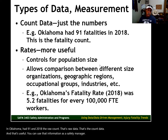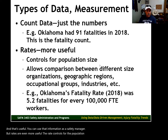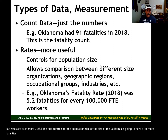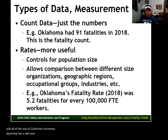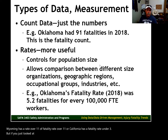But rates are even more useful. The rate controls for the population size or the size of the economy. California is going to have a lot more fatalities than Wyoming, but California has a much lower rate when you control for the 30 million people that live there and the size of California's economy. Wyoming has a fatality rate over 11, where California has a fatality rate under three. But if you just looked at the counts, it would be misleading. The rates are more useful.